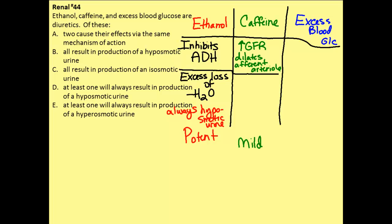If someone does drink caffeine, you will see that increase in GFR. We're increasing our filtration, but when we filter, it's a relatively isoosmotic solution. It's tough to say for a given situation whether the urine itself would still be isoosmotic, because there are certainly things happening later in the nephron past the glomerulus, but we'll assume it's still relatively isoosmotic because we typically filter an isoosmotic solution.